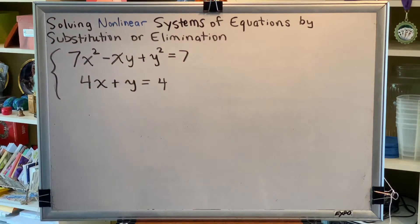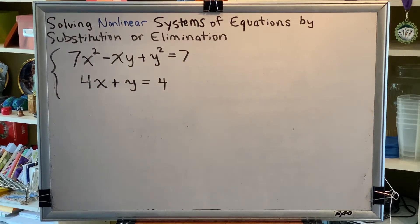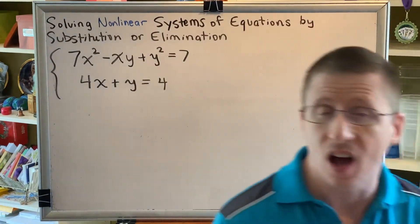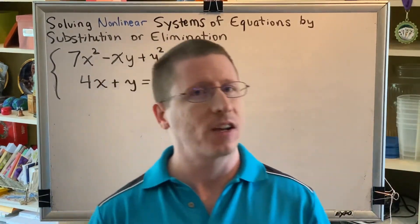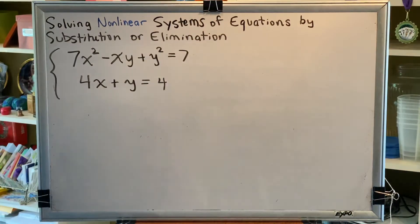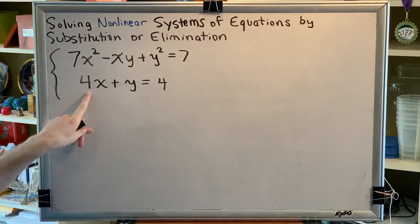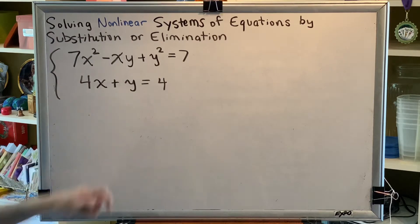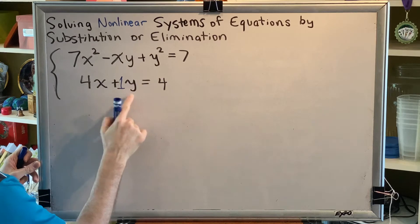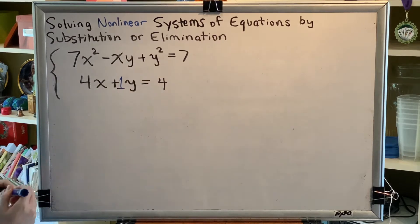Step 2, look at the coefficients of the x or y terms. And remember, when we say x or y, we really mean x or y. Not x squared, not y cubed, not xy. Just an x, just a y. Well, we've only got two of those, here and here. This one has a coefficient of 4, this one has a coefficient of 1. And for that reason, we have a y term with a coefficient of positive 1. We will use substitution for this problem.